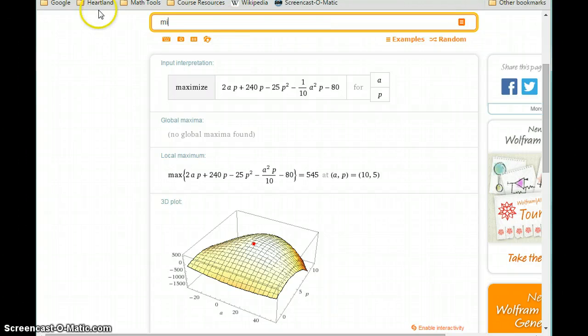So in this case we're looking to minimize 3 halves x squared plus y squared minus 7x minus 2y minus 2xy plus 96 for x and y.